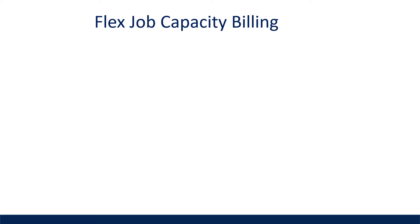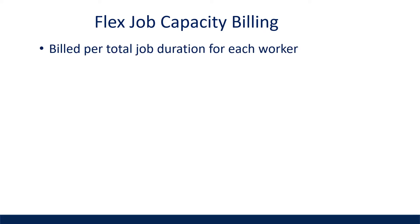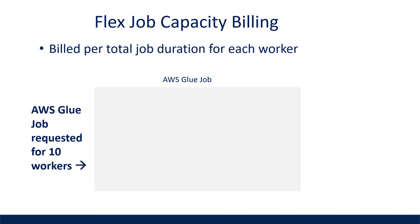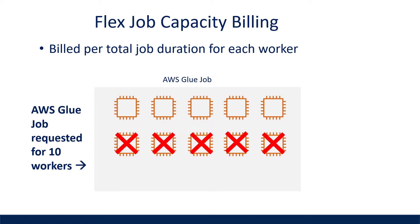So how are Flex Capacity jobs billed? Flex jobs are billed per worker, which means that you're only billed for the capacity that ran during the execution of the job, or the duration that it ran. For example, if you ran an AWS Flex Glue job for 10 workers and AWS Glue was only able to acquire 5 workers, you're only billed for 5 workers and for the duration that the workers ran. If during the job run 2 out of 5 workers are reclaimed, then billing for those 2 workers is stopped while billing for the remaining 3 workers continues. If provisioning for the 2 reclaimed workers is successful during the job run, billing for those 2 will start again.